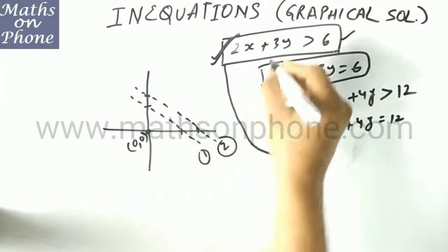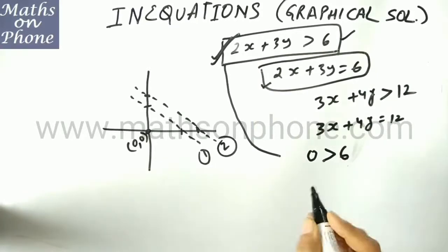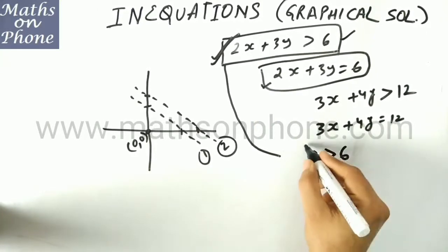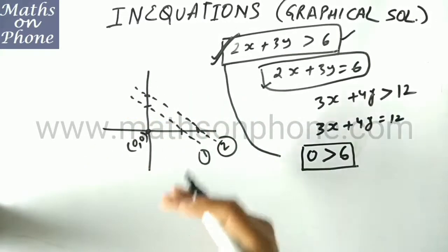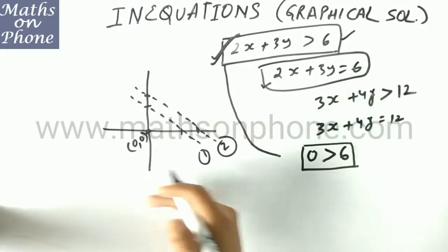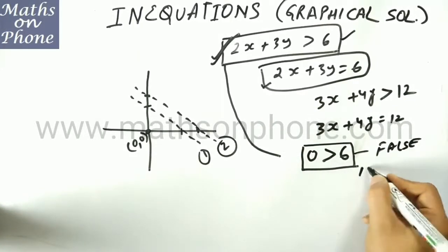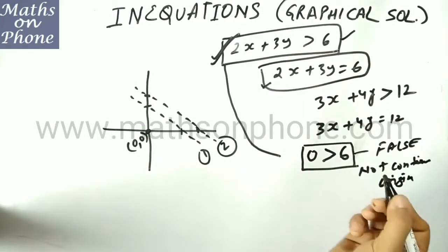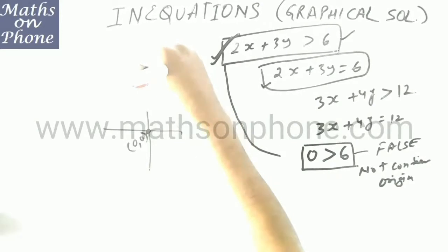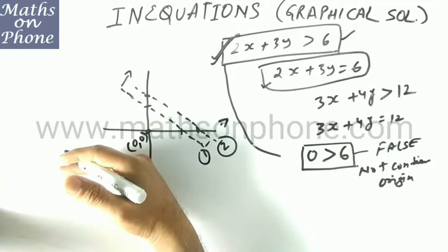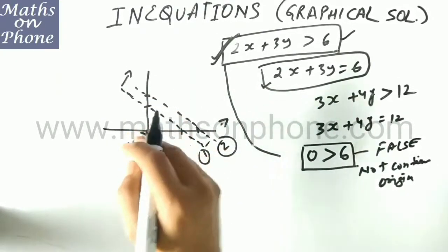Suppose I put the coordinate of origin, that is (0, 0): 2 times 0 plus 3 times 0 gives 0, and 0 is greater than 6 — is that correct or wrong? This is definitely wrong. That means we don't have to shade the region containing the origin, so we have to go for the region not containing the origin. If it is false, go for the region not containing origin. If it is true, go for the region containing origin. So the region here is upward, because the downward region is containing the origin and the upward region is not containing the origin with respect to line 1.